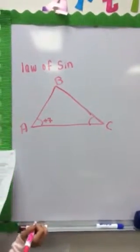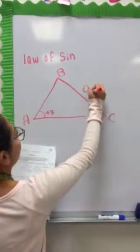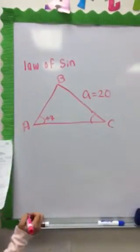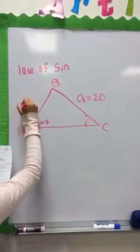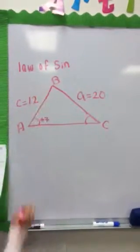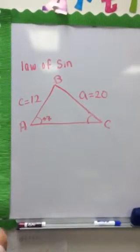Side A equals 20, and side C equals 12. Find the other three parts of triangle ABC.